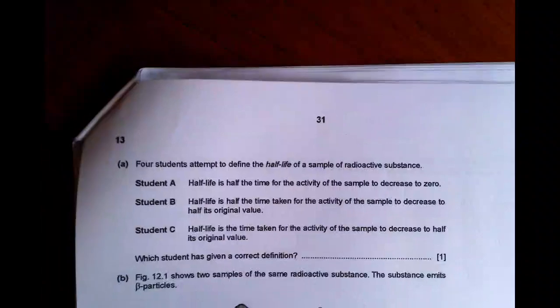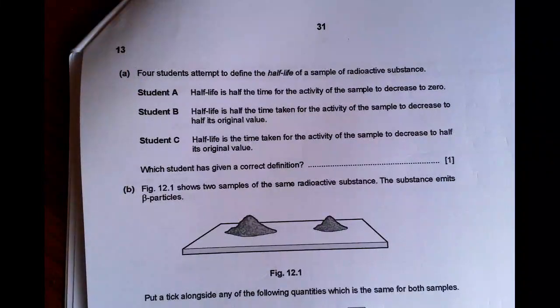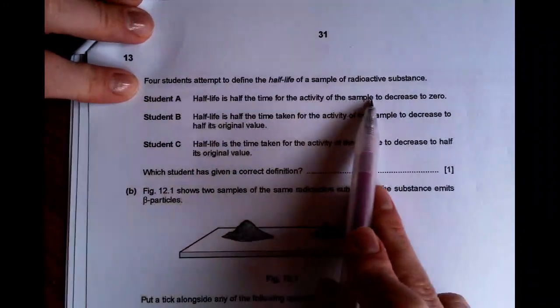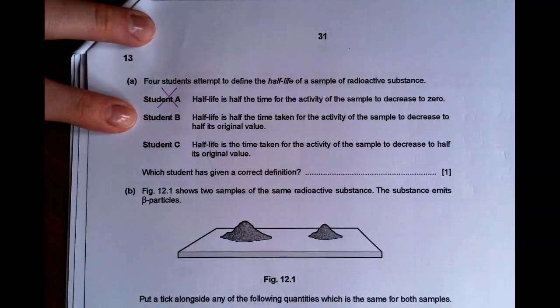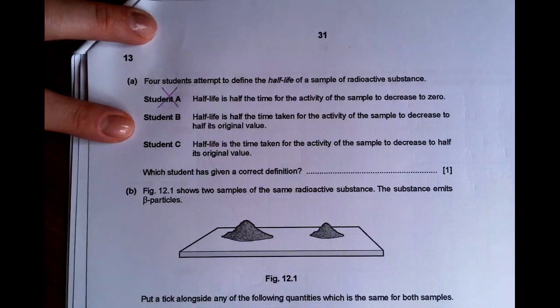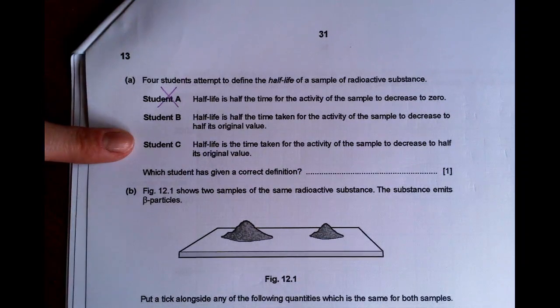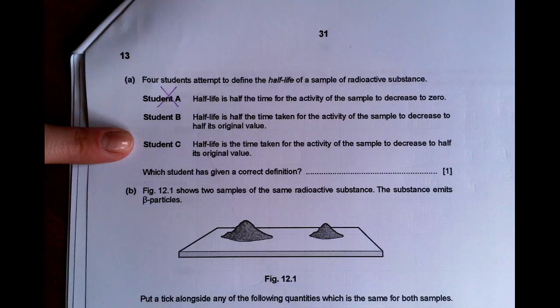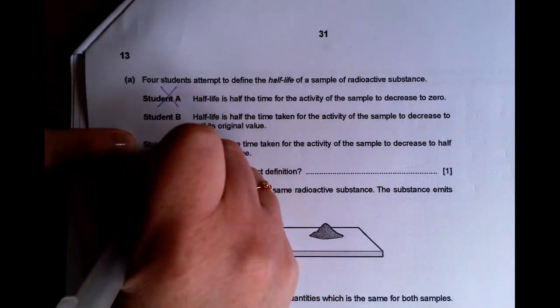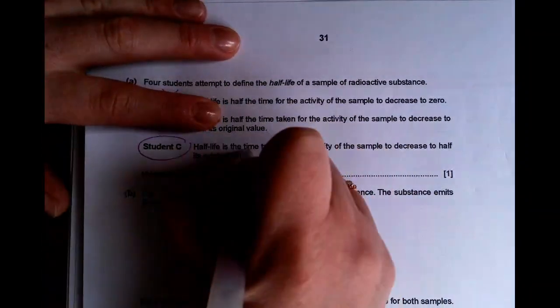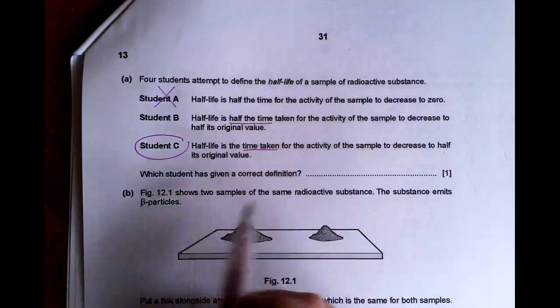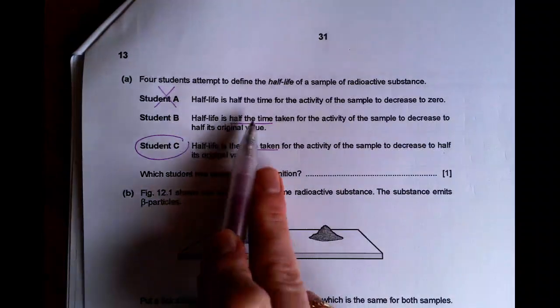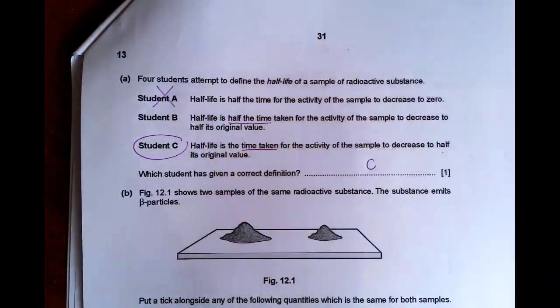So, question 13 is about half-life. Student A, B, or C is trying to define half-life. Half-life is half the time for the activity of the sample to decrease to zero. No, that is not correct. Half-life is the time taken for the activity of the sample to decrease to half its original value. That's not bad. Half-life for C is the time taken for the activity of the sample to decrease to half its original value. So, it is C. Sorry, I was just looking at what the difference is. It's quite misleading. Look carefully. It's either the time taken or half the time taken. That's the difference between student B and C. To decrease to half its original value, it is the time taken for half of its original value, not half of the time taken. So, it's student C there. So, just be really careful with your reading.